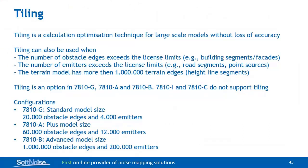Tiling — what is tiling? Tiling is an optimization technique for large scale models without any loss of accuracy, if you use it correctly. Tiling can also be used when the number of obstacle edges exceeds the limits of your license — obstacle edges are the segments of buildings, the facades of buildings — or the number of emitters exceeds the license limit, or the terrain model has more than 1 million terrain edges. The tiling option is available in the G, A, and B configurations. The I and C configurations do not support tiling.